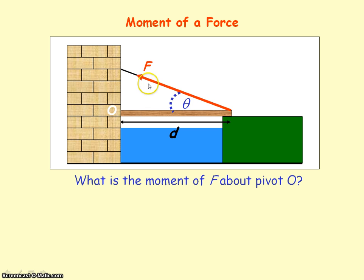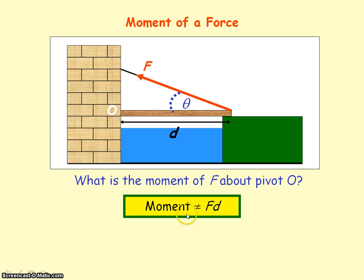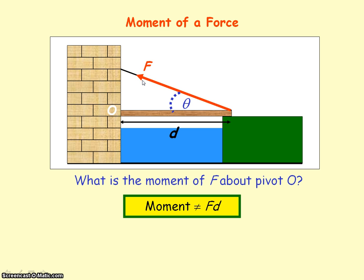In this case, what would be the moment of the force F about pivot point O? Well, it's not going to be equal to F times D, because the definition of moment is the force multiplied by its perpendicular distance from the pivot point. In this case, force F and distance D are not perpendicular to each other. So one way to determine the moment is to resolve the force into its vertical and horizontal components.